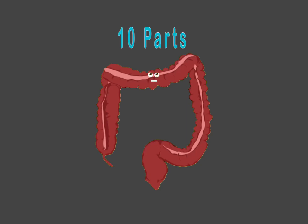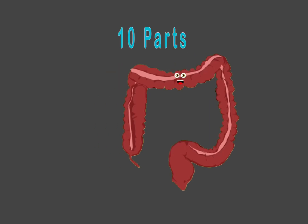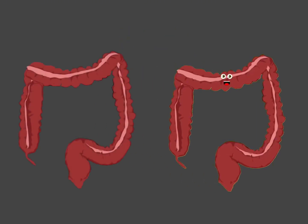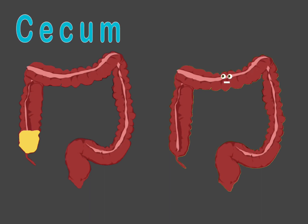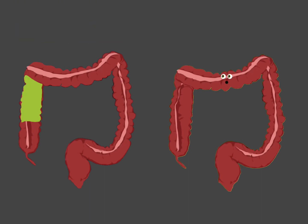Made up of ten different parts all connected into one. We'll start at the tip of your appendix, attached to your cecum. The next part of my tubular shape is the ascending colon.